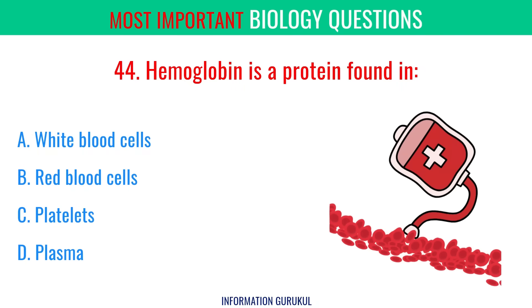Hemoglobin is a protein found in red blood cells.